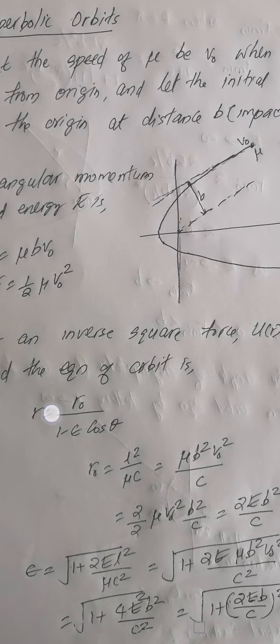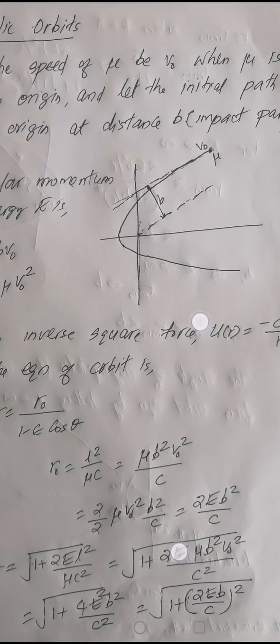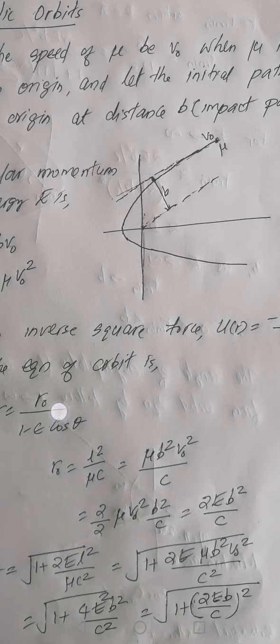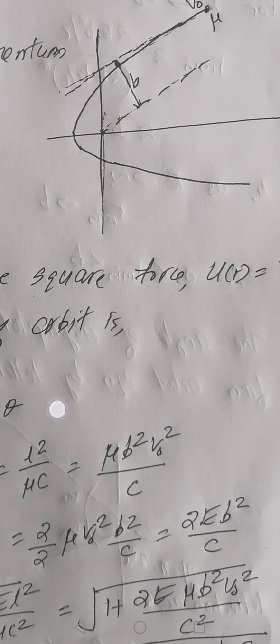Since L equals mu*b*v0, L² equals mu²*b²*v0². Therefore, r0 equals L²/(mu*c) equals mu²*b²*v0²/(mu*c), which gives mu*b²*v0²/c. Multiplying and dividing by 2, and recognizing that half*mu*v0² is the energy E, we get r0 equals 2E*b²/c.